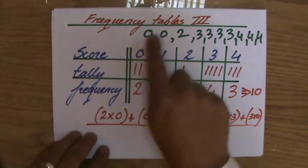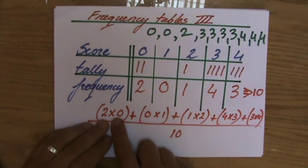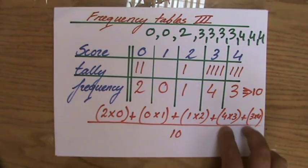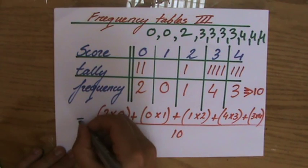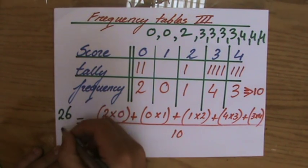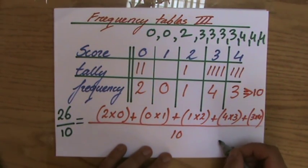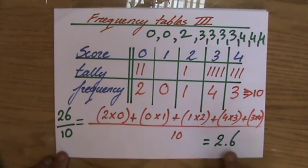Adding that all up: zero plus zero plus two plus twelve plus twelve equals twenty-six. So twenty-six divided by ten gives 2.6. That's close to what I estimated — about 2.5 — so that looks right.